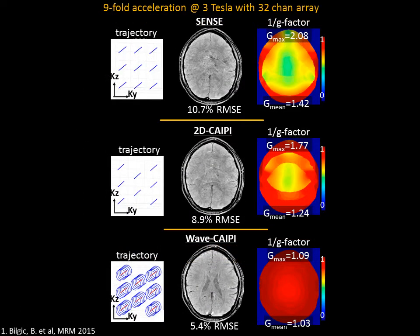Looking at the performance of Wave CAIPIRINHA compared to traditional 2D CAIPIRINHA or SENSE, Wave CAIPIRINHA at 9-fold acceleration factors is the only method still able to achieve acceptable G-factor levels.